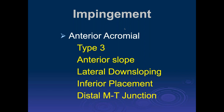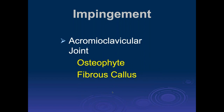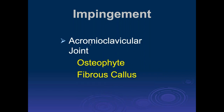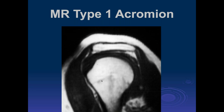Anterior acromial impingement can be caused by a type 3 acromion, anterior sloping of the acromion, lateral downsloping, inferior placement of the acromion with respect to the distal clavicle, and disease of the distal musculotendinous junction. That concept has been around for many years and has not been retracted. You can also get disease at the AC joint due to osteophytes and fibrous hypertrophic callus formation.